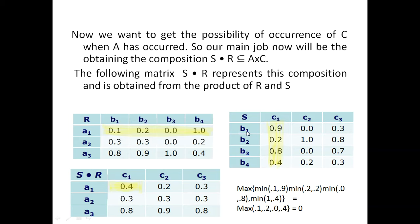Composition is similar to matrix multiplication, but we use a max-min combination. Take the first row of R and multiply each element individually with each element of the first column of S, taking the minimum at each step: minimum of 0.1 and 0.9 is 0.1; minimum of 0.2 and 0.2 is 0.2; minimum of 0.0 and 0.8 is 0.0; minimum of 0.1 and 0.4 is 0.1. Wait — the minimum values are 0.1, 0.2, 0.0, and 0.4, and then we take the maximum of those, giving 0.4, which is placed in the result matrix. Similarly, first row with the second column gives a maximum of 0.2.